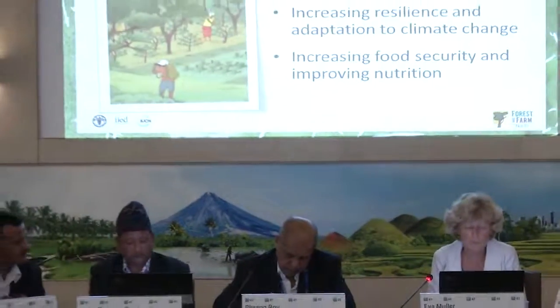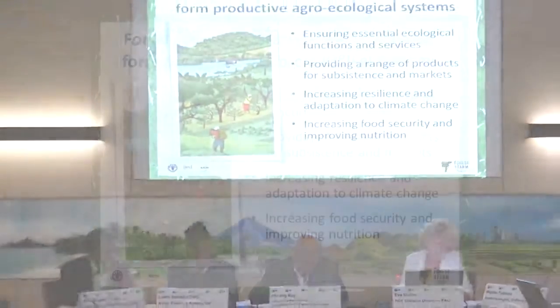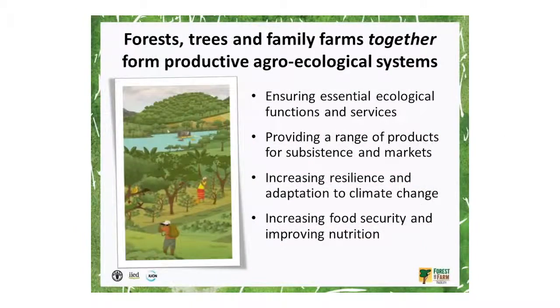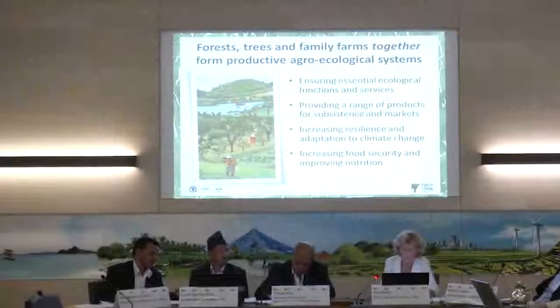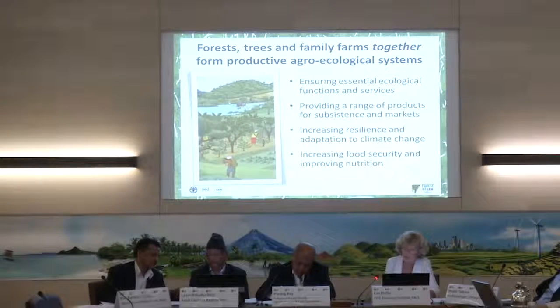At the landscape level, forests, trees, and family farms together form productive agro-forestry systems. Their combination ensures essential ecological functions and services of the ecosystems. They provide a range of products for subsistence and for markets, increase resilience and facilitate adaptation to climate change, and they increase food security and nutrition.